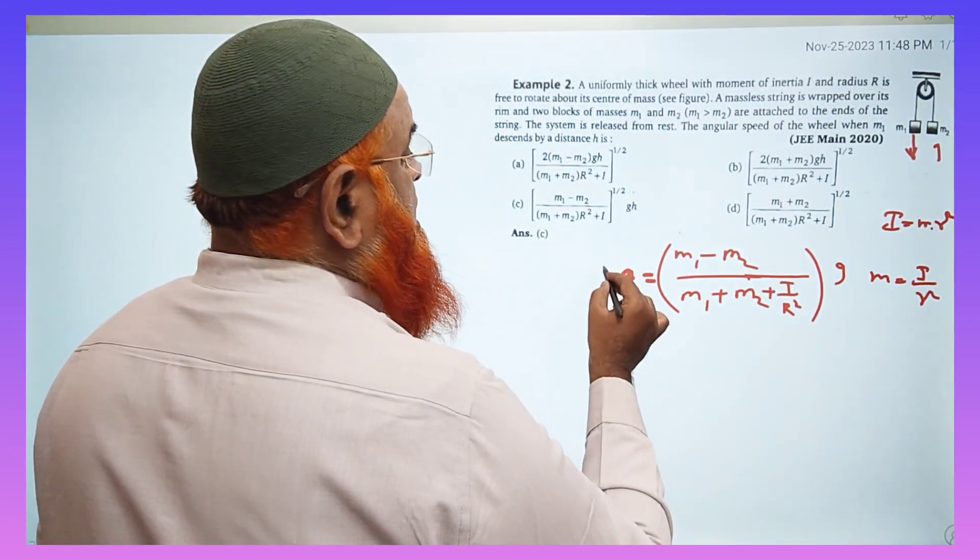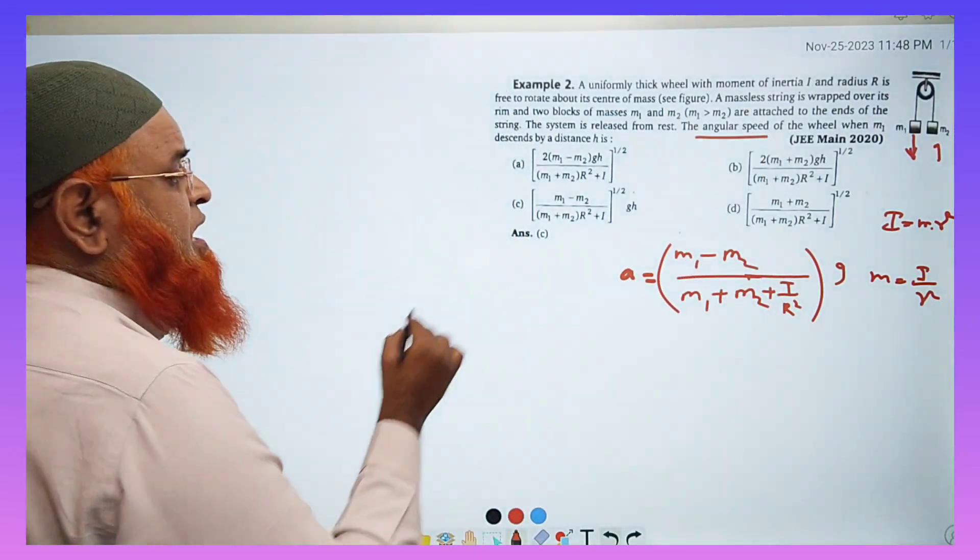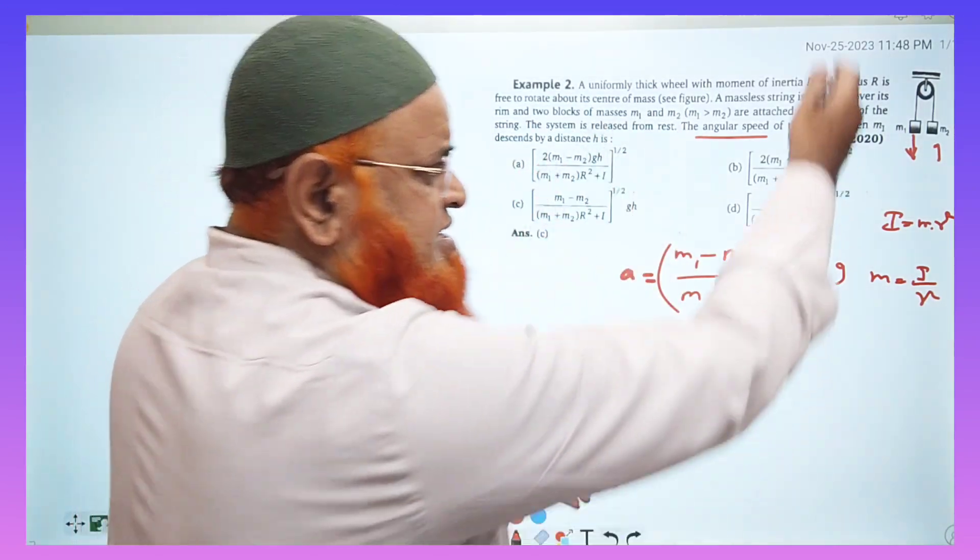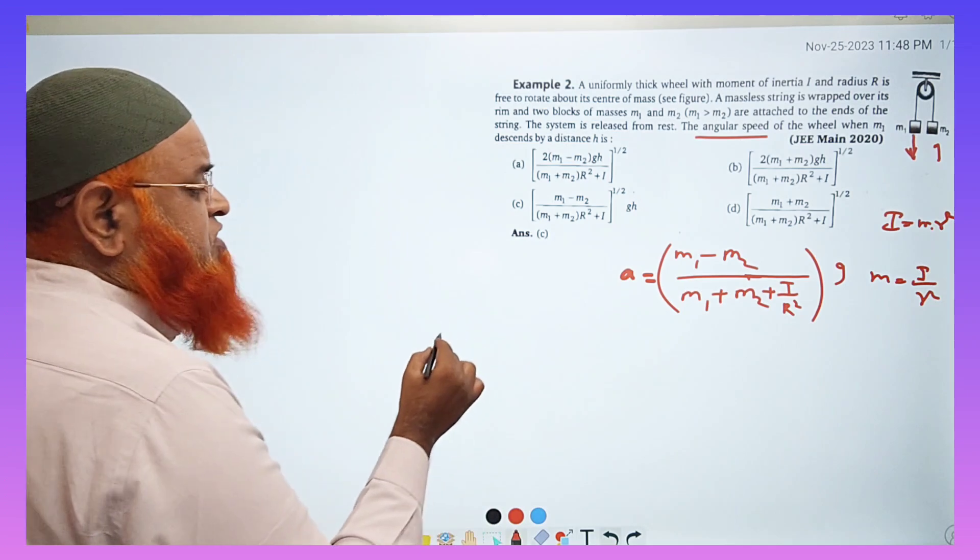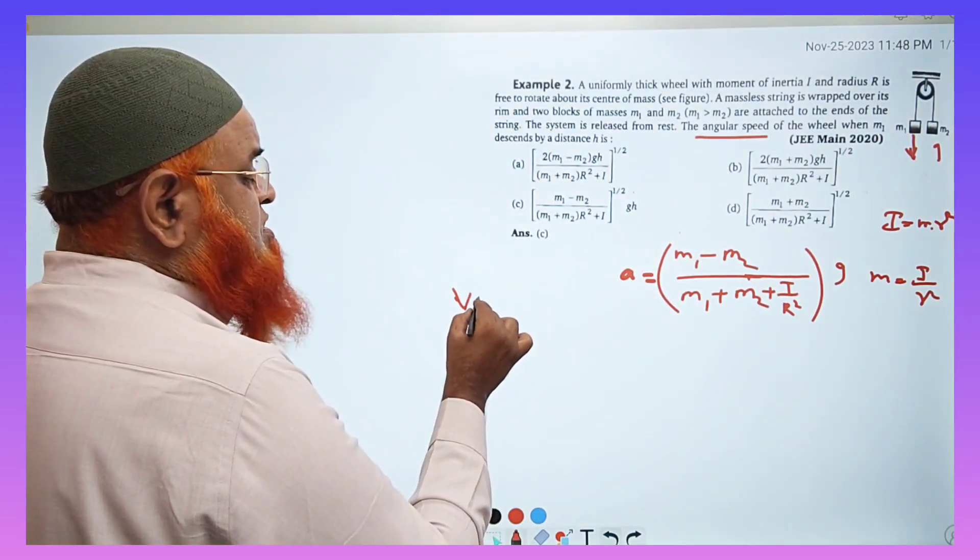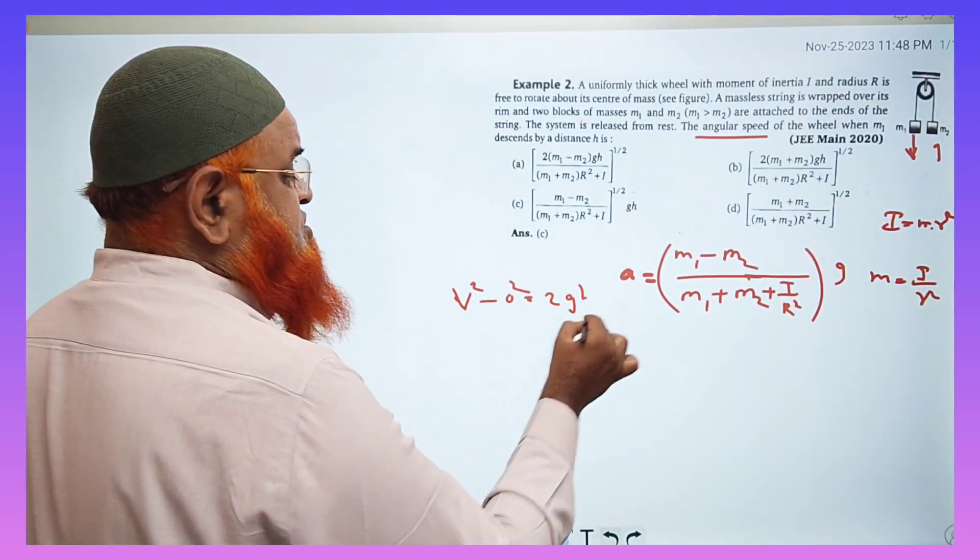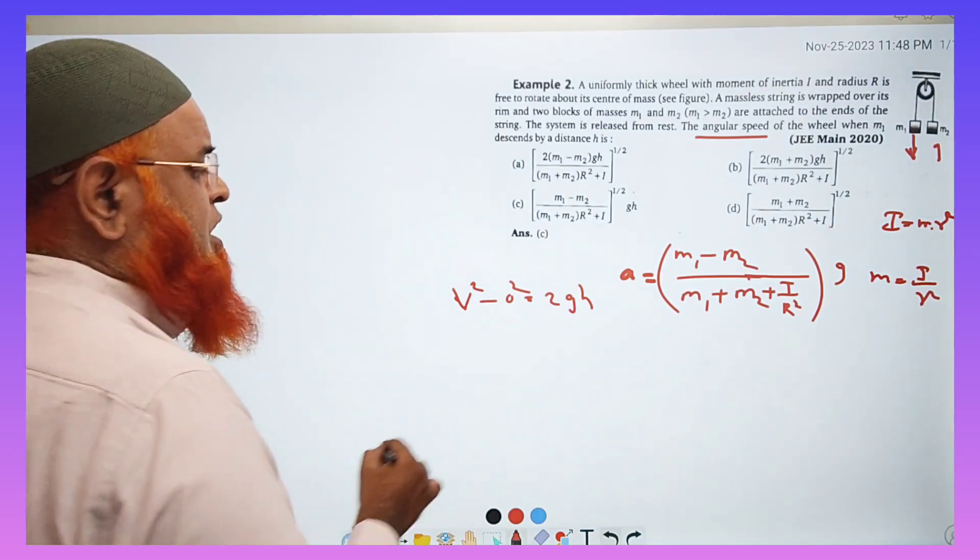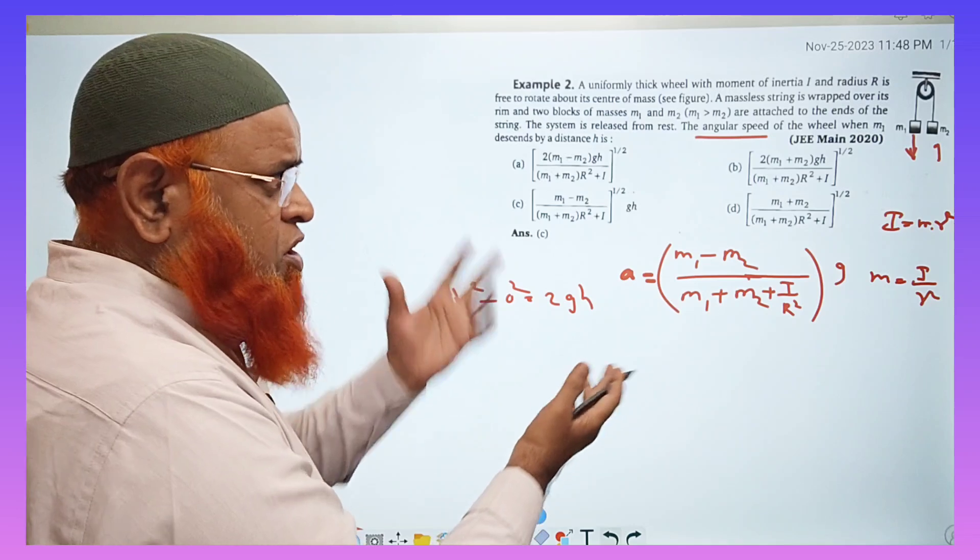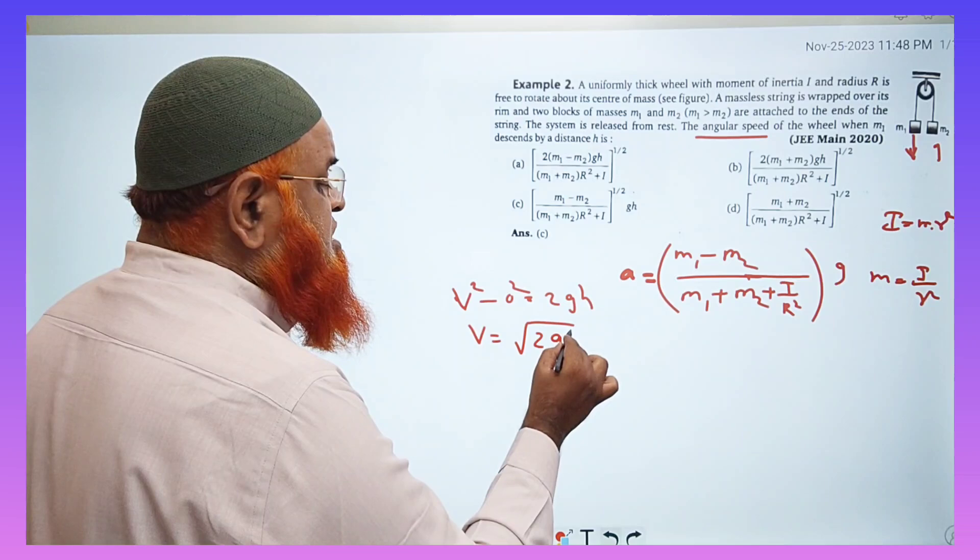Then what are you going to get? So acceleration is there, you have to find out angular speed. And it is said that the system is released from rest. So what is the formula for velocity if it has traveled certain distance? You know velocity v square minus 0 square is equal to 2gh is the basic formula. So initial velocity of the pulley system is 0, the block is 0, we just write v is equal to square root of 2gh.